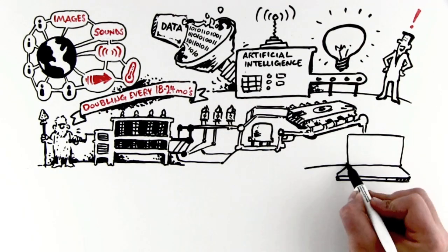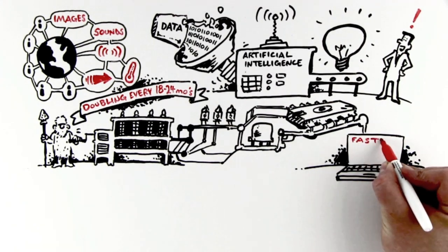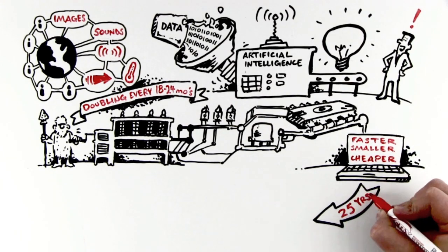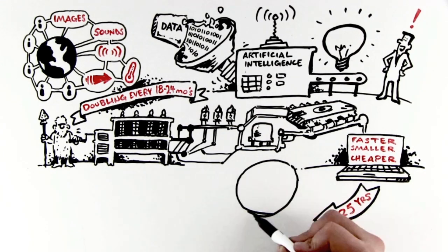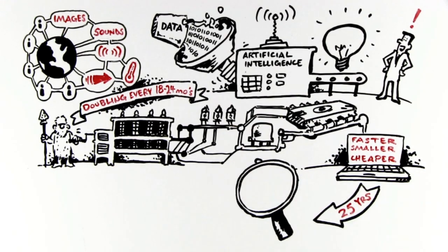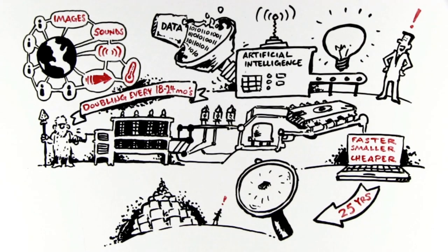Computers are now a million times faster, a million times smaller, and a thousand times cheaper than they were just 25 years ago. At this rate, over the next 25 years, computers will soon become microscopic in size, infinite in supply, and effectively free.